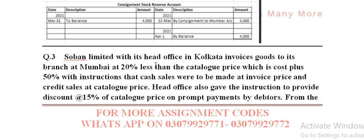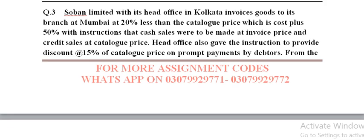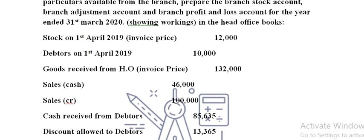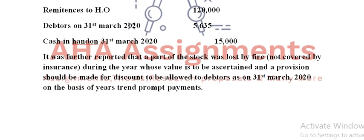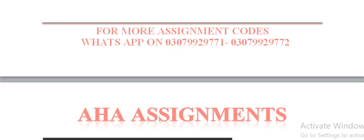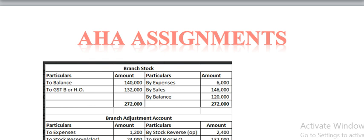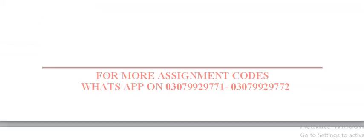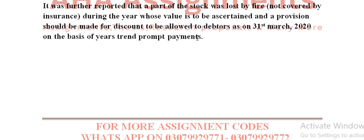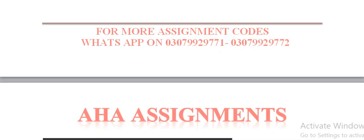Question number 3: Subhan Limited, with its head office in Kolkata, invoices goods to its branch at Mumbai at 20% above the catalog price. Saari description given hai — discount 15% hai, aur stock is date ko invoice price pe hai. Sab kuch given hai. In ki basis pe aapne payments find out karna hai. Excel pe hi yeh bhi working jayegi saari aap ki.